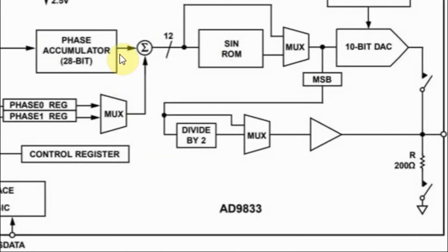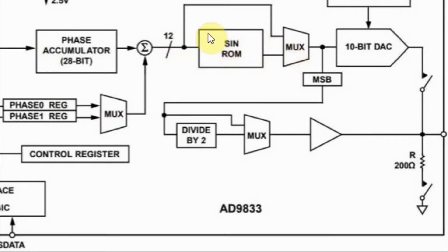The output of the phase accumulator with the added phase shift is then fed into a sine-ROM to generate a sinusoidal waveform. If this ROM is skipped, then we have a triangular waveform.